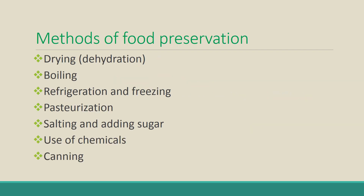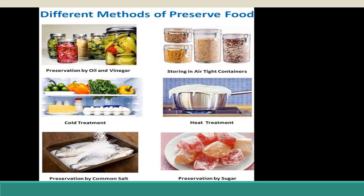The different methods of food preservation include drying or dehydration — removing of water. Drying is simply removing the water, done mainly for food grains. Generally it is done in sunlight, but in factories heat is also used for drying food material. Other methods include boiling, refrigeration and freezing, pasteurization, salting and adding sugar, use of chemicals, and canning.